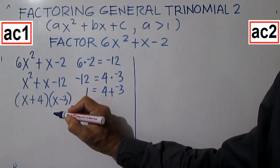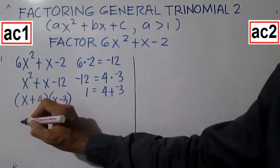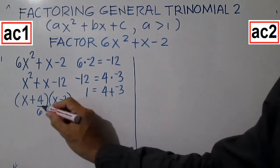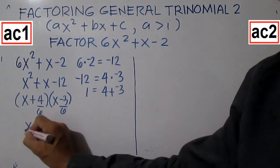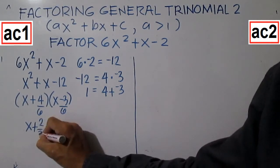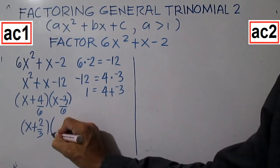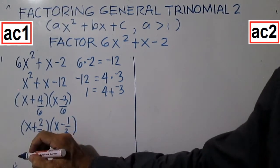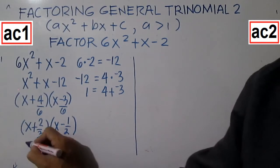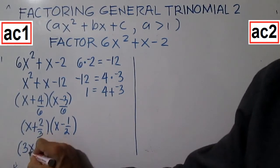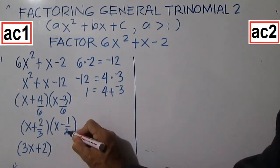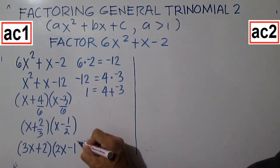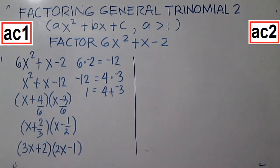Divide 4 by 6 and negative 3 by 6 also. Simplify: 4 and 6 give X plus 2 over 3, and the other factor is X minus 1 half. Multiply the denominators back to X: 3 times X gives 3X plus 2, and 2 times X gives 2X minus 1. The factors are 3X plus 2 and 2X minus 1.